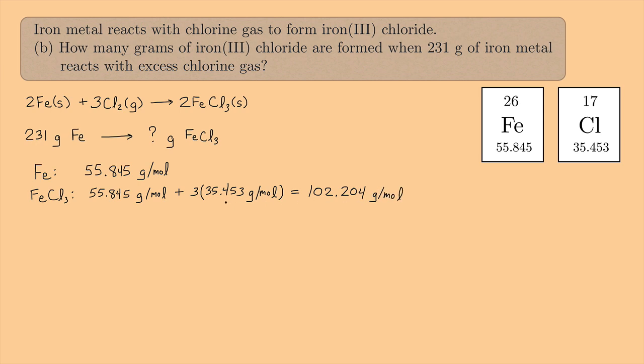So with a stoichiometry problem like this, my advice is to always start with what you know. What do we know? 231 grams of iron. So I'm going to start with that over here. 231 grams of iron, and I'm going to set up my train tracks here.